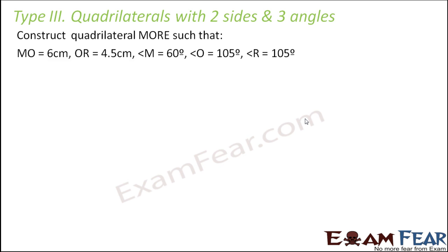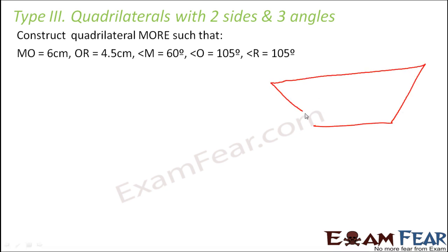Let's say you have to construct a quadrilateral MORE such that MO = 6 cm, OR = 4.5 cm, angle M = 60°, angle O = 105°, and angle R = 105°. Let us quickly draw a rough sketch of quadrilateral MORE.